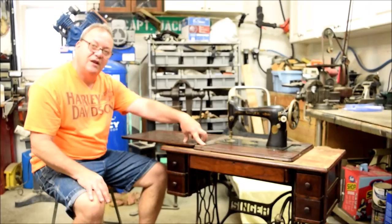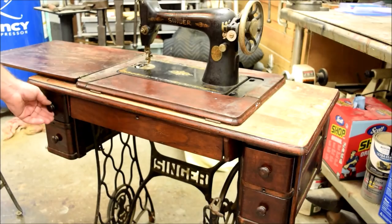So let's get started on this. It's a typical Singer. It's got the same types of things that we've seen before. A couple of little breaks, a lot of veneer damage, and the first step is disassembly.